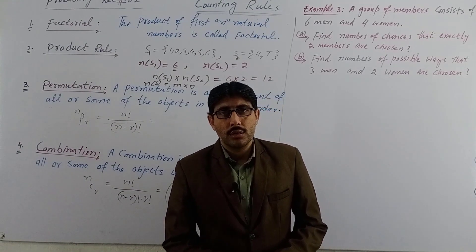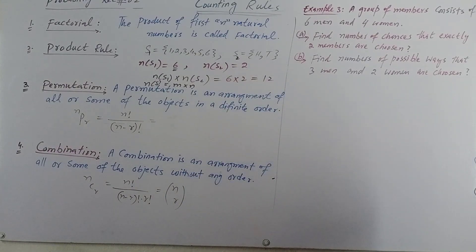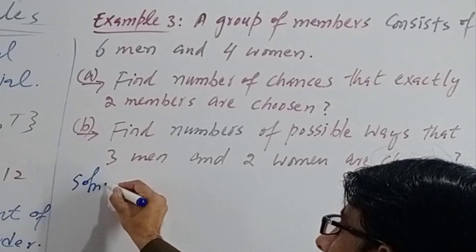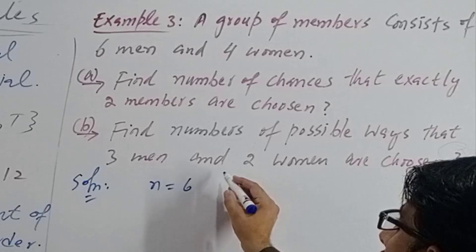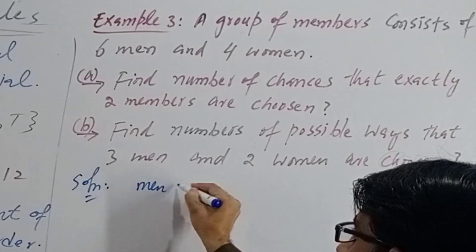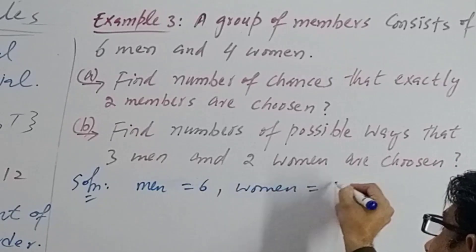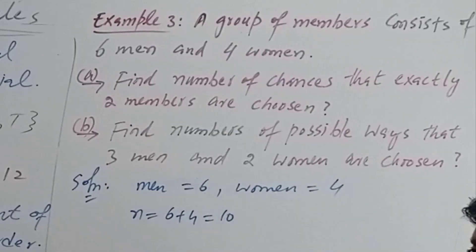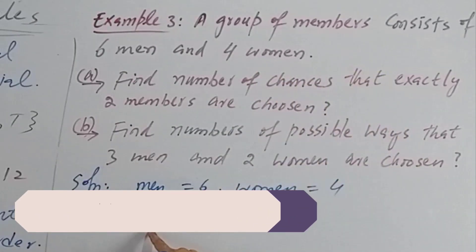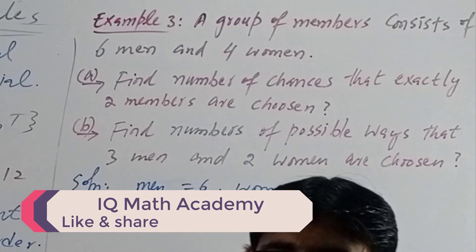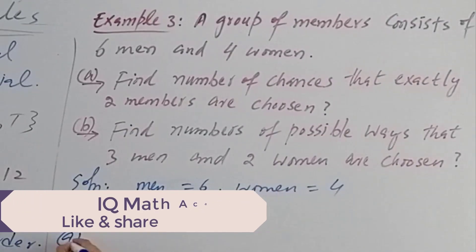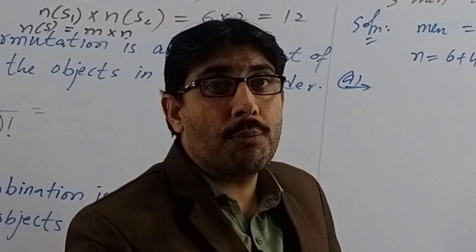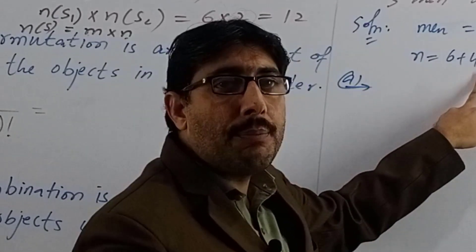Another example on the product rule: A group of members consists of 6 men and 4 women. So total n equals 6 plus 4 equals 10 members. Part one: find the number of ways that exactly two members are chosen from the group of ten, with no specific requirement on gender.